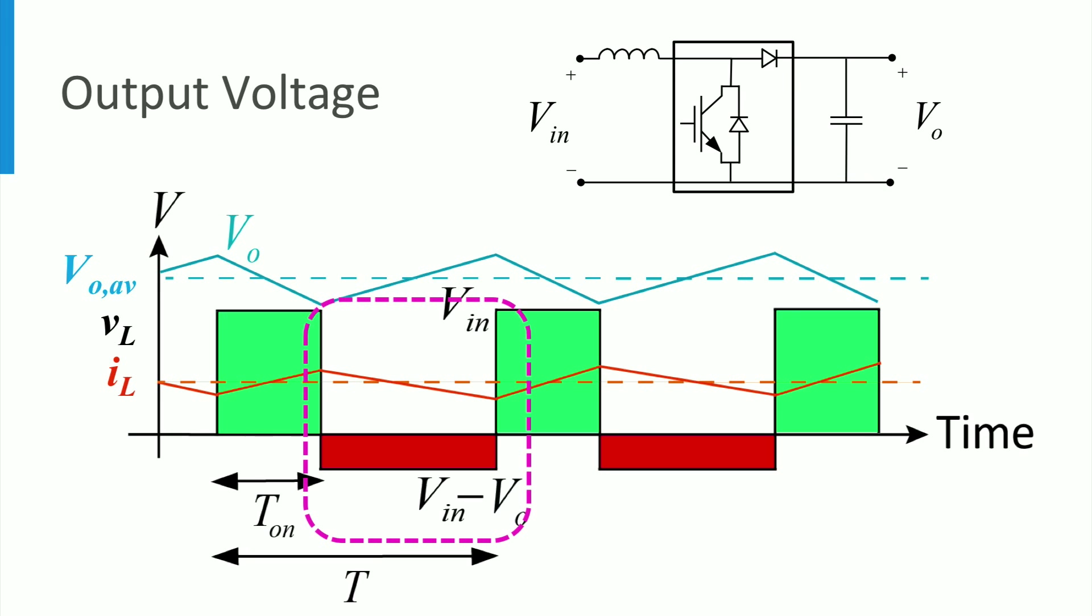Then, the energy stored in the inductor is provided to the output during the off-time of the switch, when the voltage across the inductor is negative as shown by the red area. During this period, the capacitor is charged where the output voltage increases.